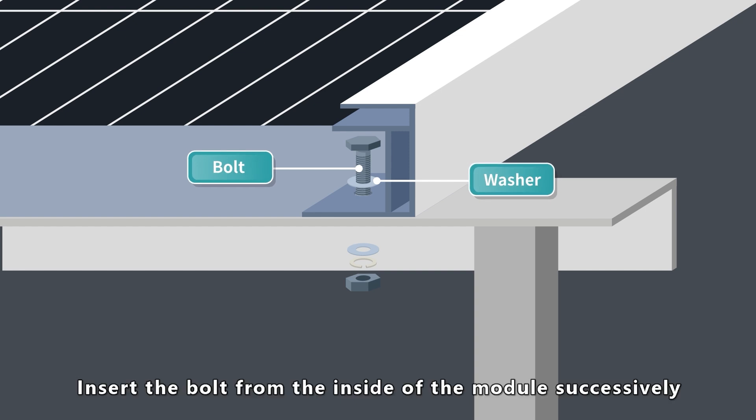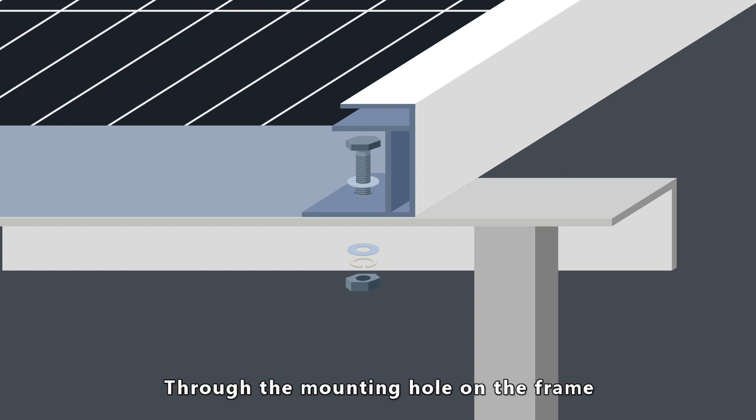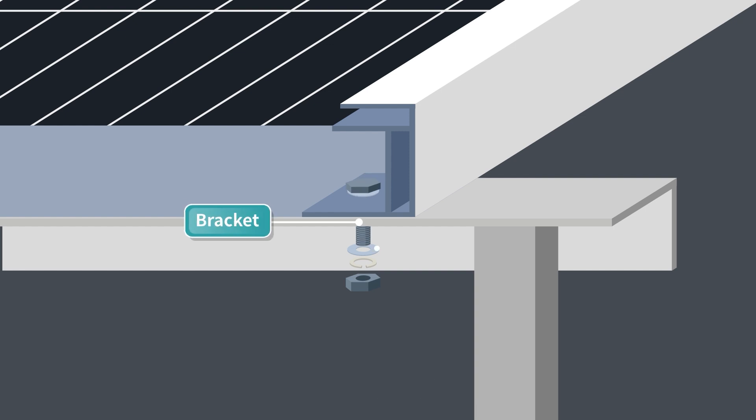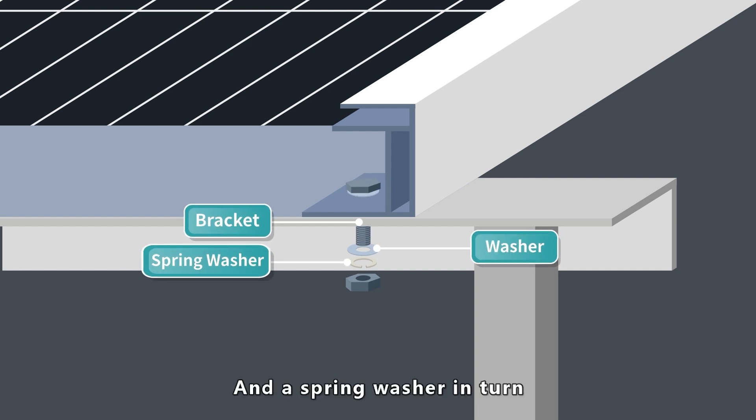Insert the bolt from the inside of the module successively through the mounting hole on the frame, the bracket, a washer, and a spring washer in turn.